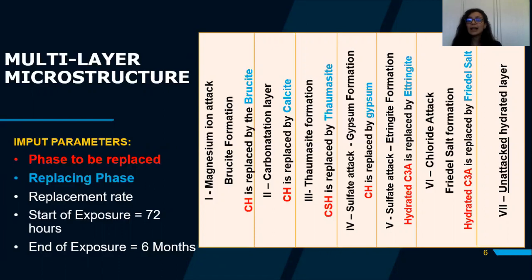In each zone, we specify the phase to be replaced, the replacing phase, and the replacement rate. In zone one, portlandite is replaced by brucite. In zone two, it is replaced by calcite. In zone four, it is replaced by gypsum. In zone three, C-S-H is replaced by thaumasite. In zones five and six, hydrated C3A is replaced by ettringite in zone five and by Friedel's salt in zone six.